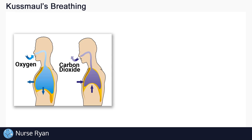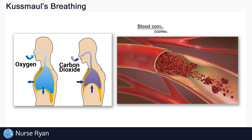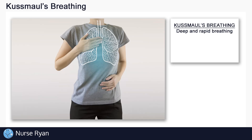Although carbon dioxide is not technically an acid on its own, it can turn into an acid when it's in our bloodstream. And that acid is called carbonic acid, which forms in our blood when carbon dioxide mixes with water. I won't go into all the details about this reaction, but the basic idea is this: the more we breathe, and more specifically, the more we exhale, the more our body can remove excess acid.